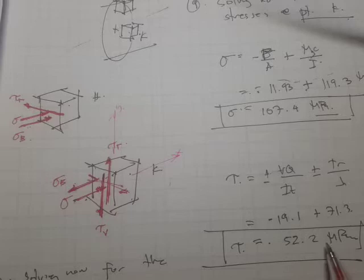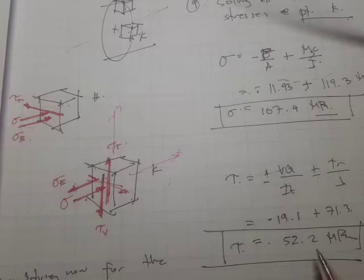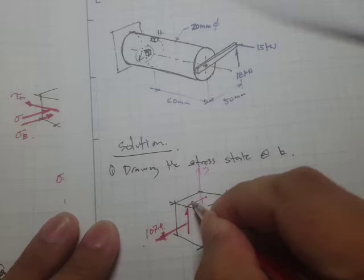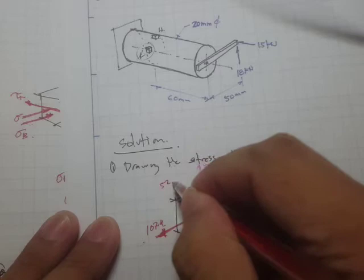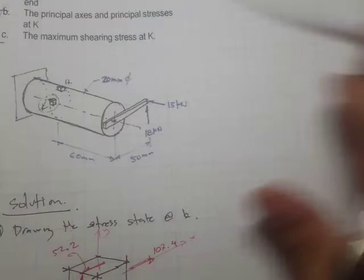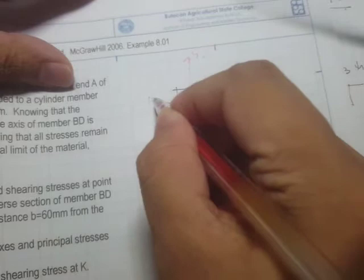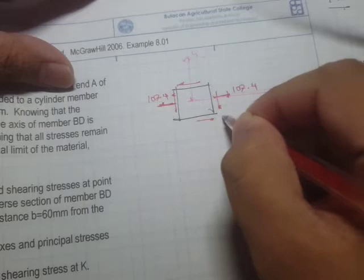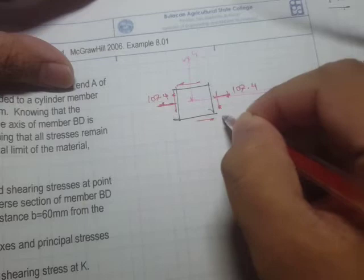For the shear, we notice there is a shear in opposite directions, producing a clockwise rotation — a positive shear going upward. The algebraic sum gives 52.2 megapascals. So this is our shear illustration. Drawing this in two dimensions: we have the X and Y axes, normal stress of 107.4 on both sides, and a shear of 52.2 megapascals. That's our state of stress.